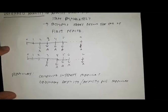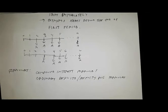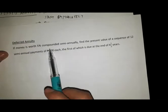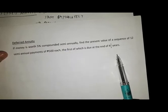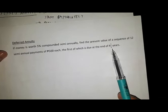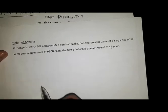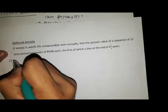Here is an example for deferred annuity: if money is worth five percent compounded semi-annually, find the present value of a sequence of 12 semi-annual payments of 500 pesos each, the first of which is due at the end of four and one-half years. Let's proceed to the cash flow diagram first.